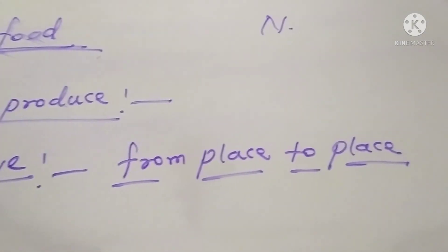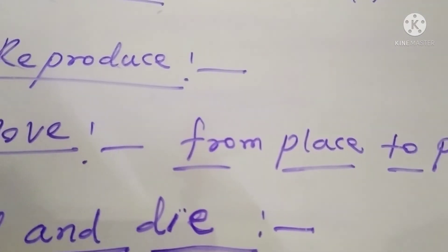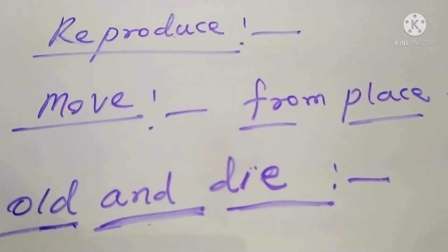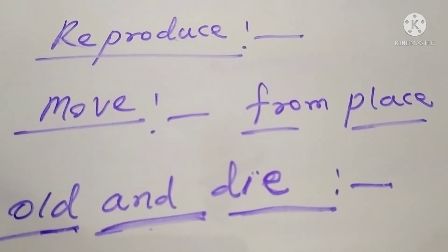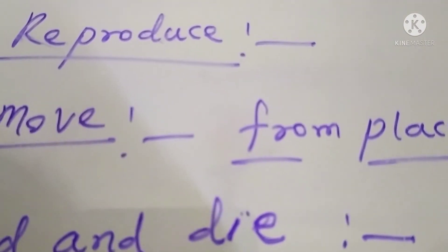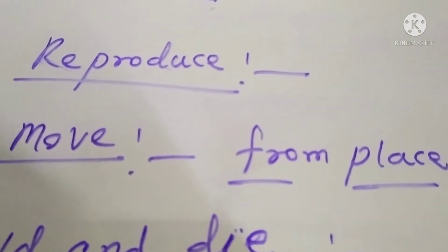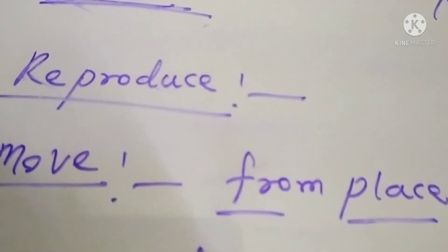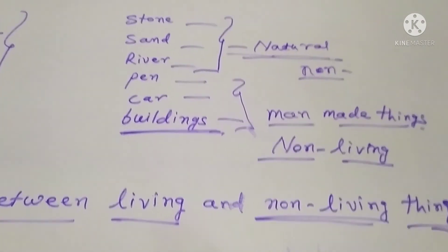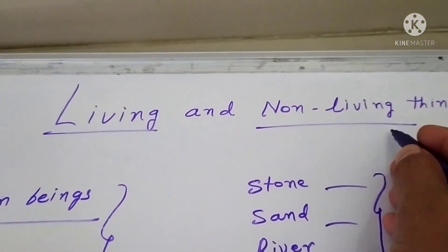Human beings and animals live for a certain period of time; during that period they grow old and finally die. Likewise, plants also live and grow old for a certain period of time and die in the end. But non-living things have no life and no growth, so they do not die.